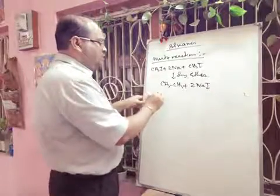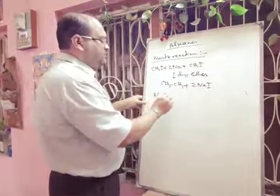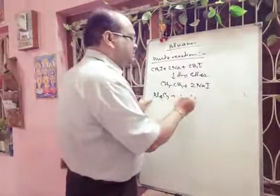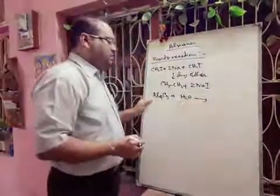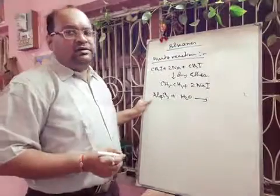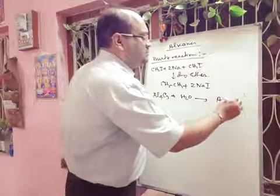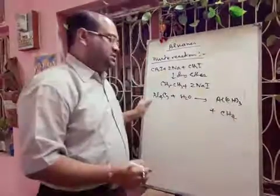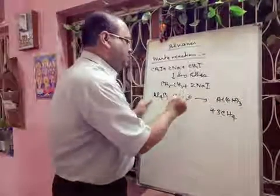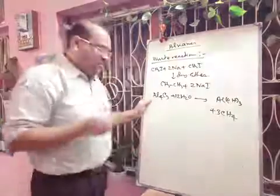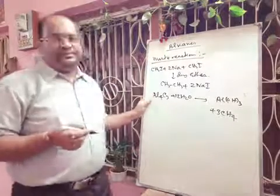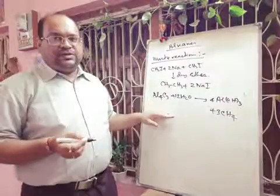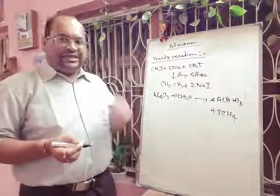Another important reaction is the hydrolysis of aluminium carbide, Al4C3. Here we add water. We get aluminium hydroxide — Al(OH)3 — and methane gas is formed: Al4C3 + 12H2O → 4Al(OH)3 + 3CH4. By this process also we can prepare methane gas.